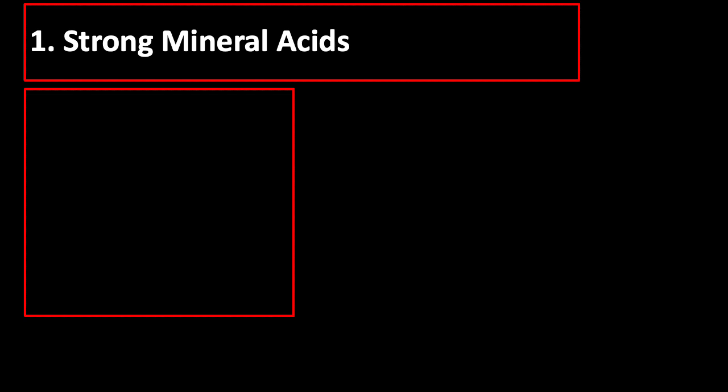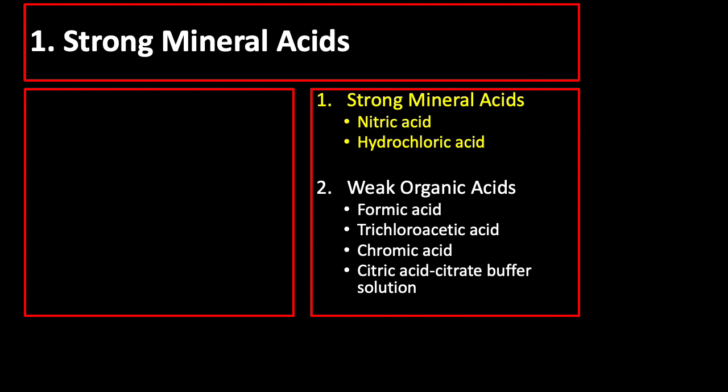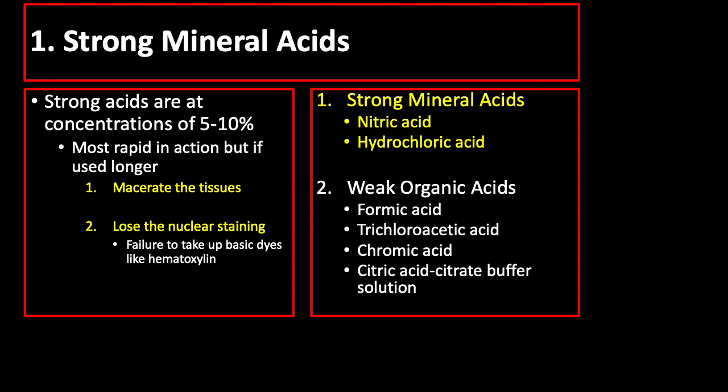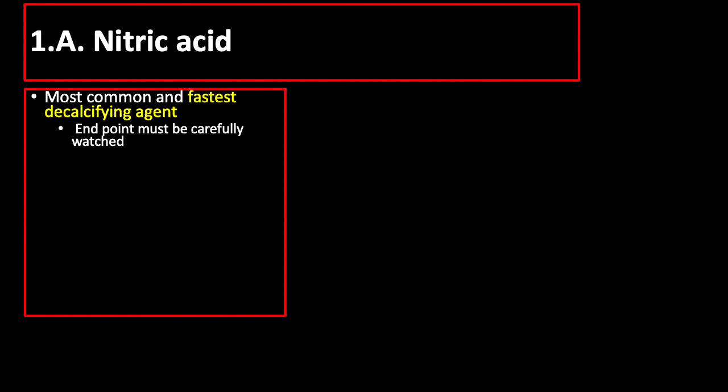Strong acids such as hydrochloric acid with a recommended concentration of 5–10% are the most rapid in action, but if used longer than necessary, strong acids can macerate tissues and can rapidly cause a loss of nuclear staining because of failure of the nuclear chromatin to take up hematoxylin and other basic dyes. Staining by acid dyes like eosin will be less affected.